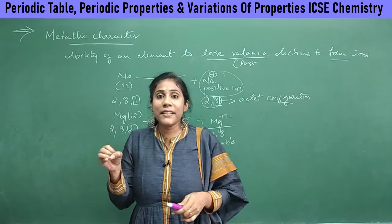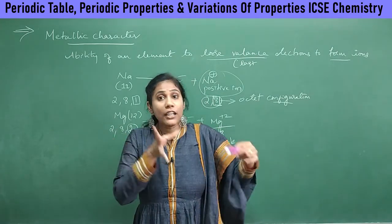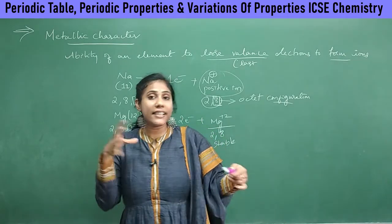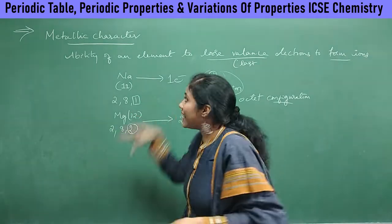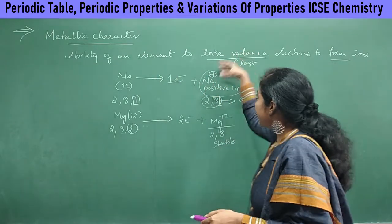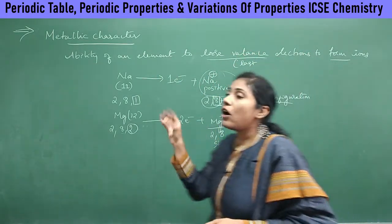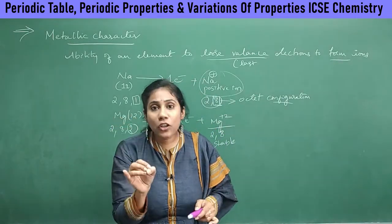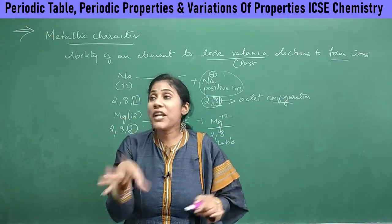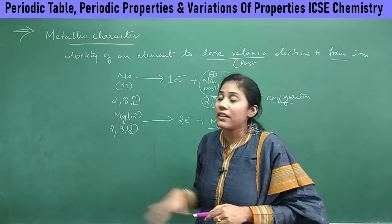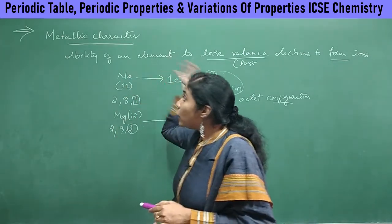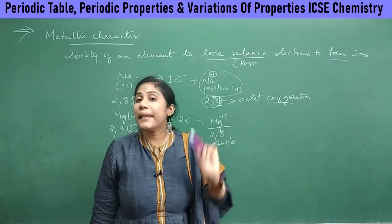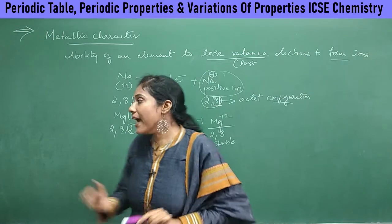In the periodic table, elements that lose electrons easily — those with a strong tendency to lose electrons — are called metals. The elements with more metallic character, which can lose electrons very nicely, are the ones we call metals.